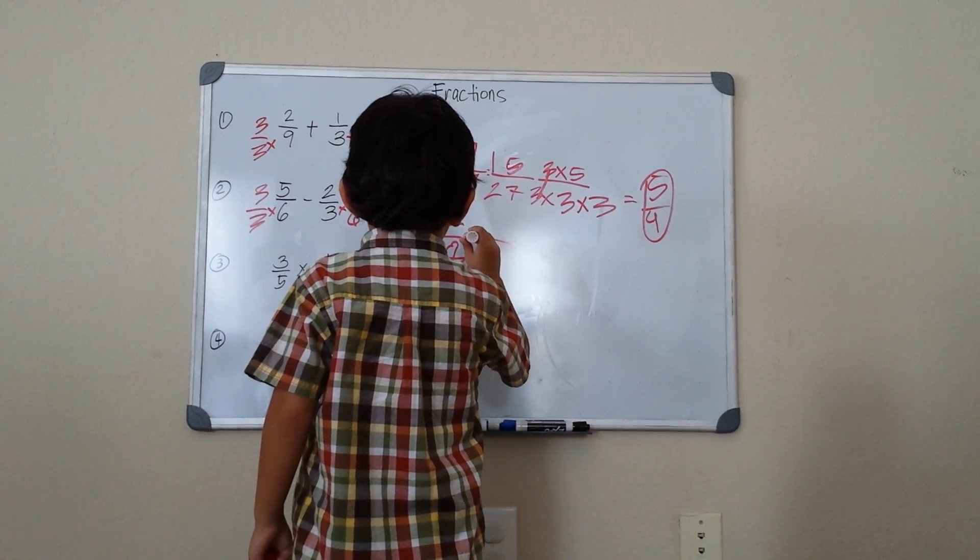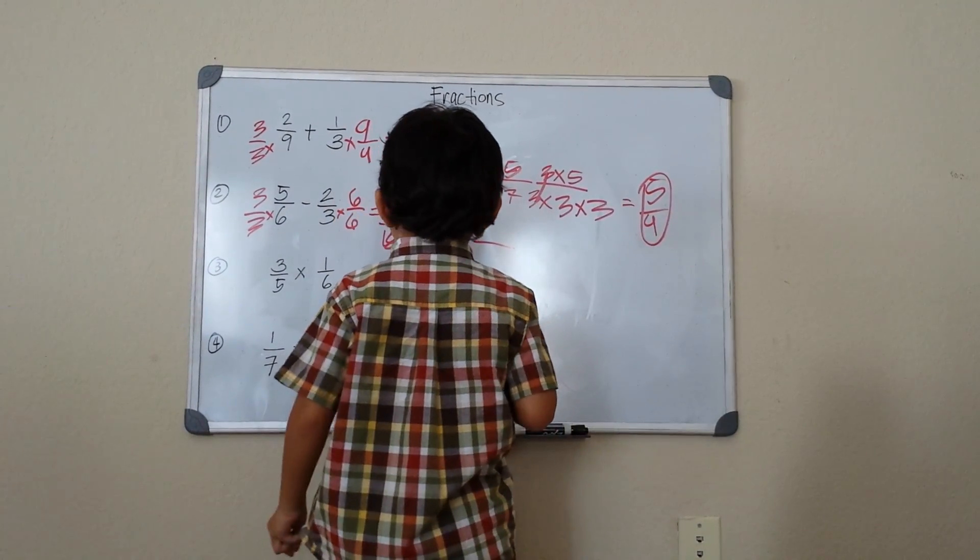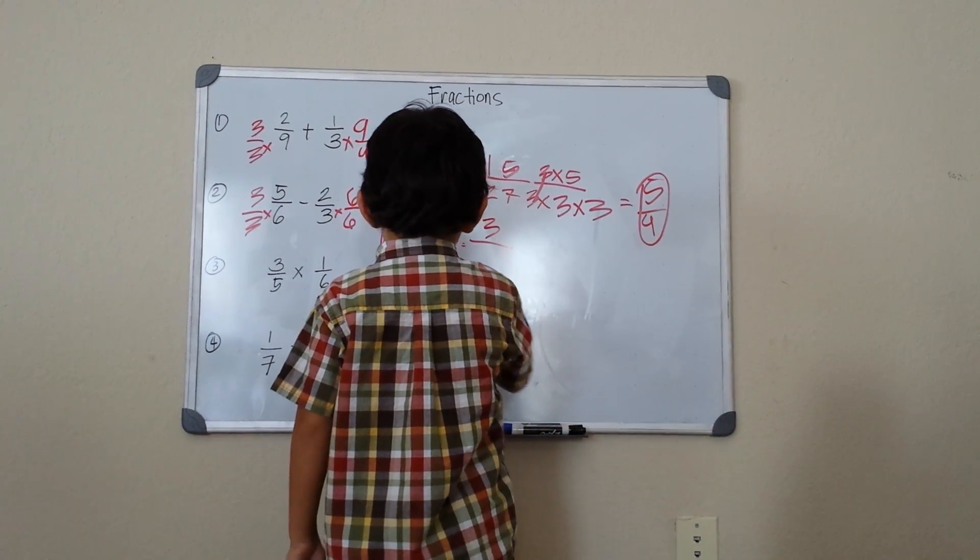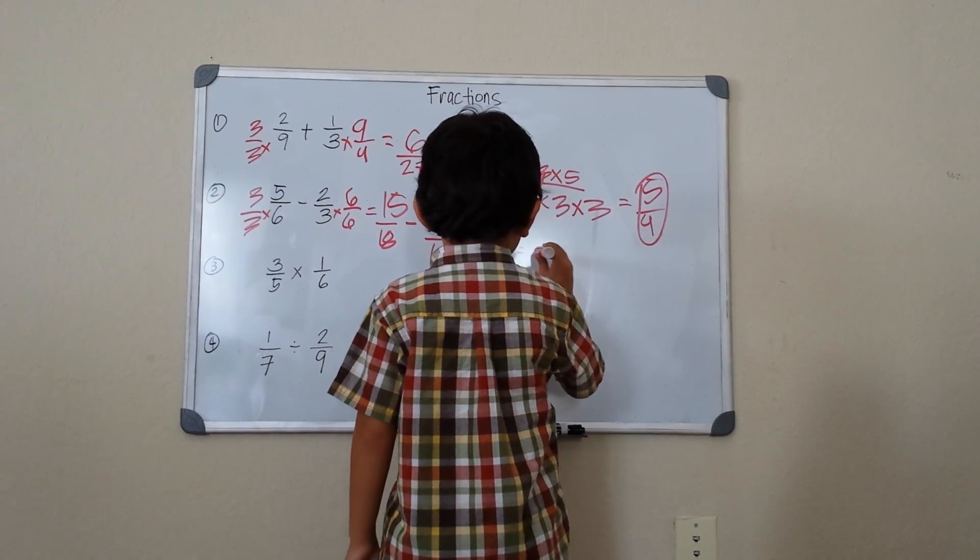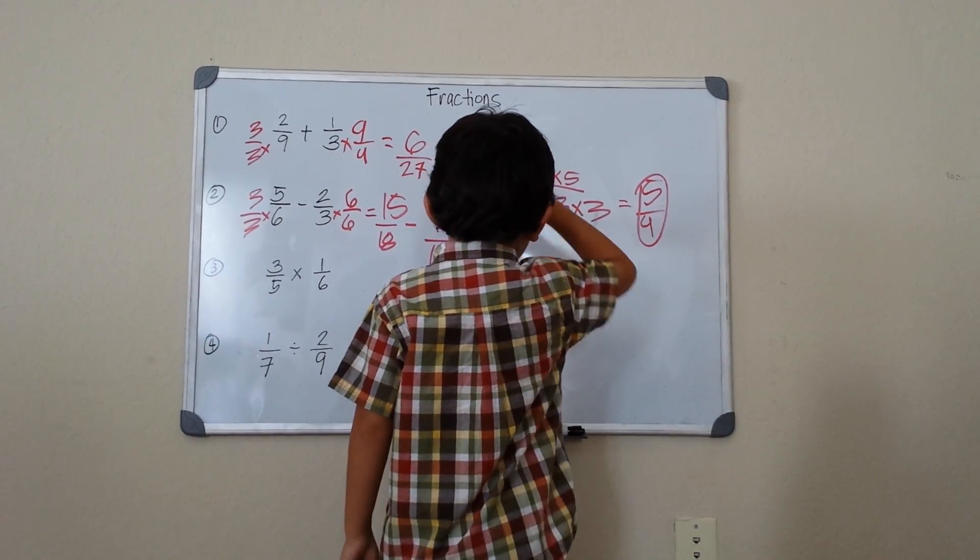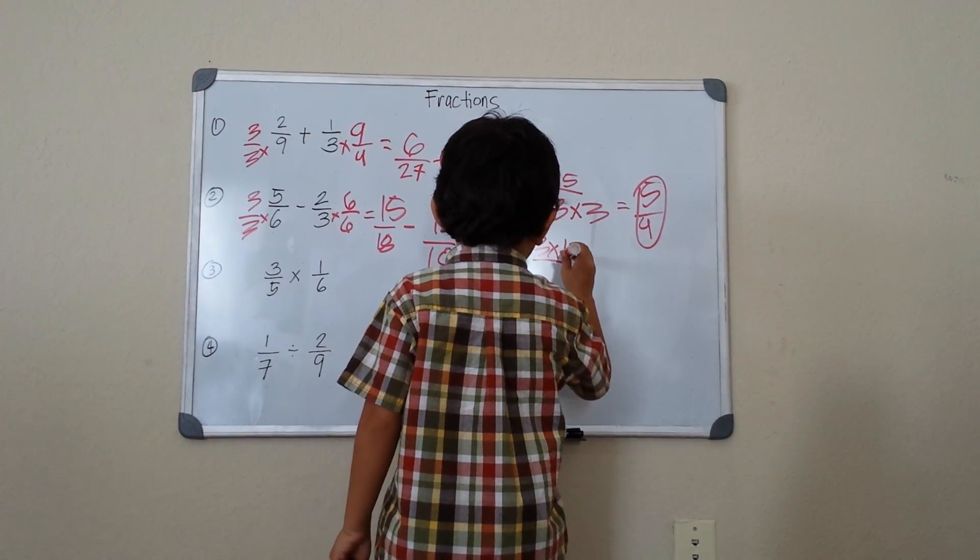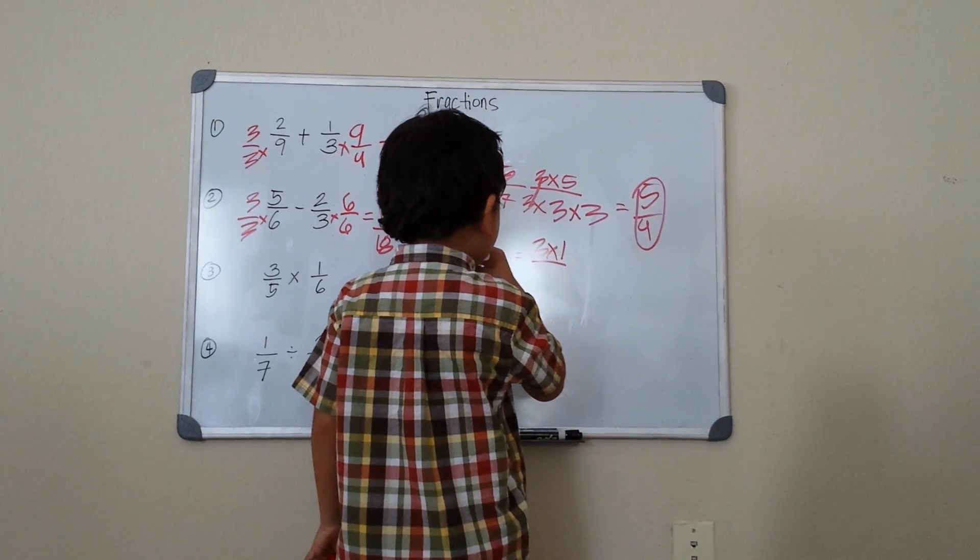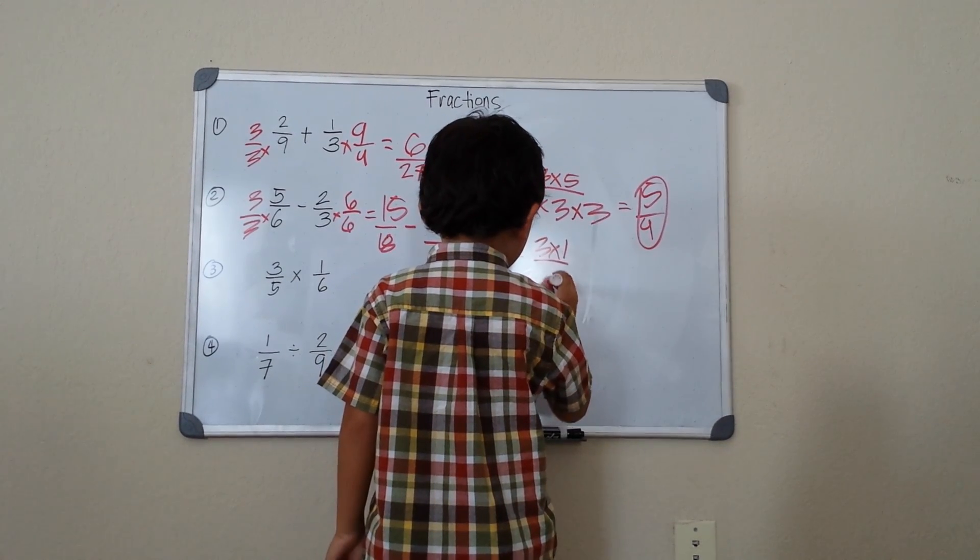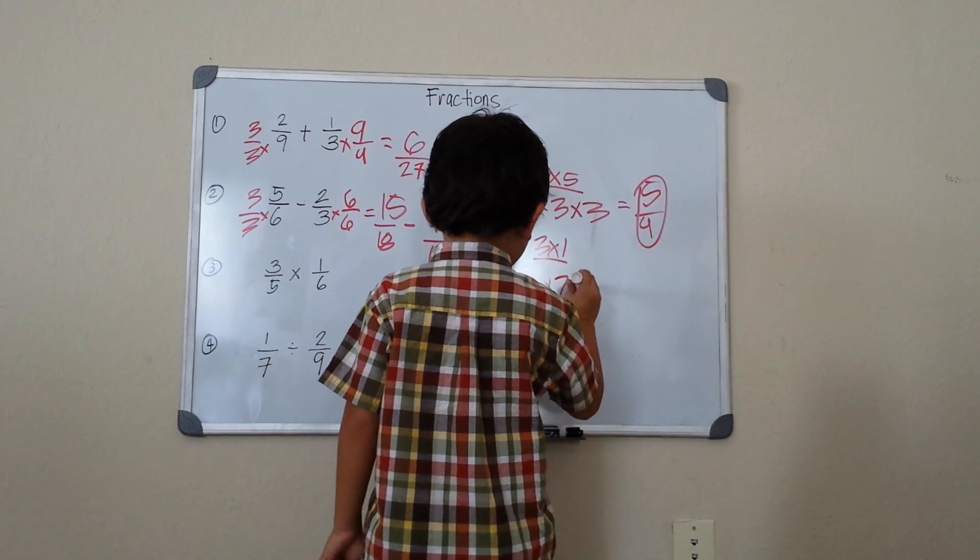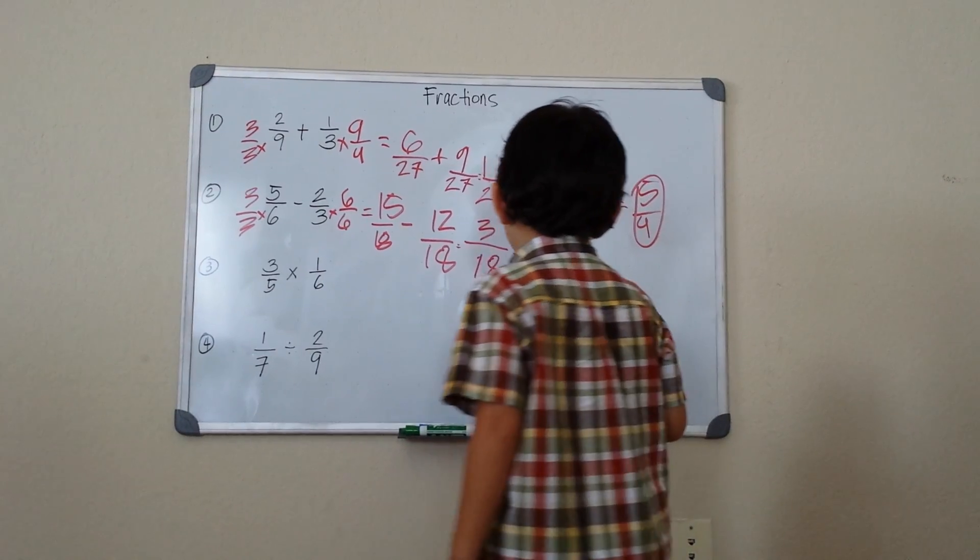It's equal to 15 minus 12, which is 3, and then 18. We can simplify it because it's a multiple of 3. 3 times 1 and 18 is 3 times 6.